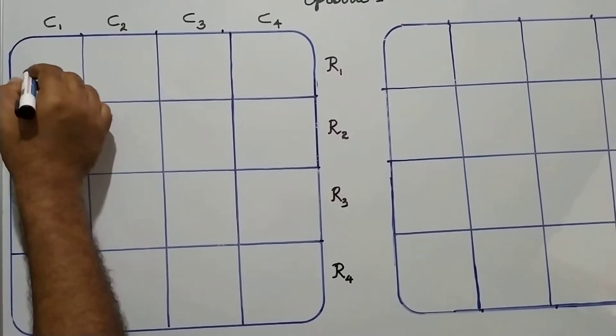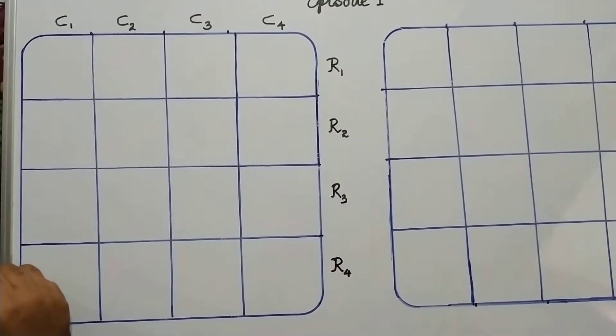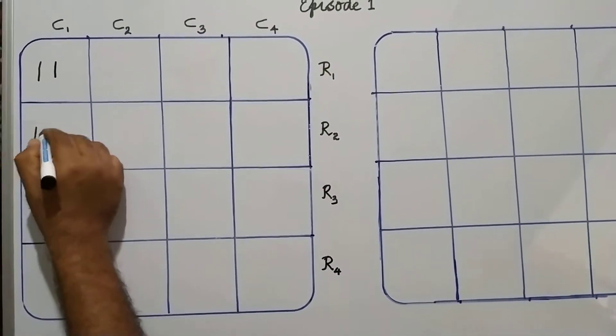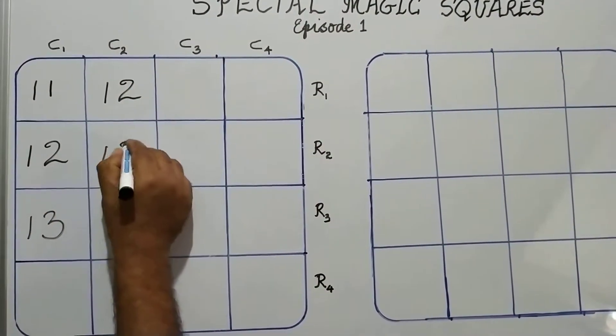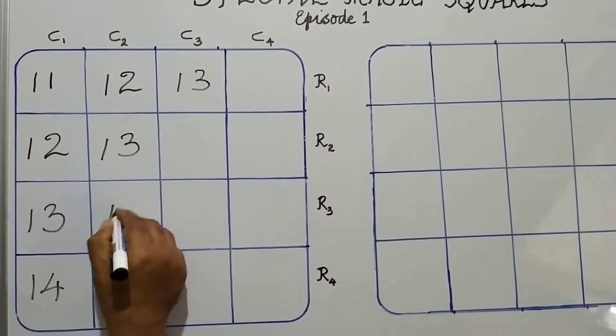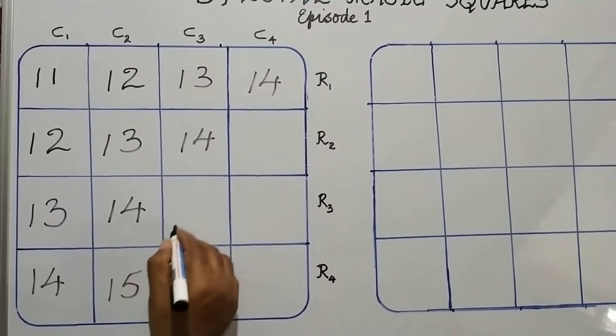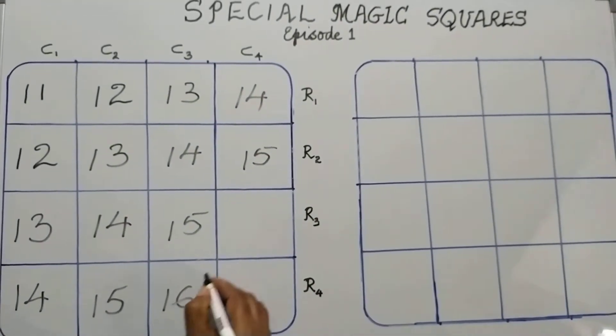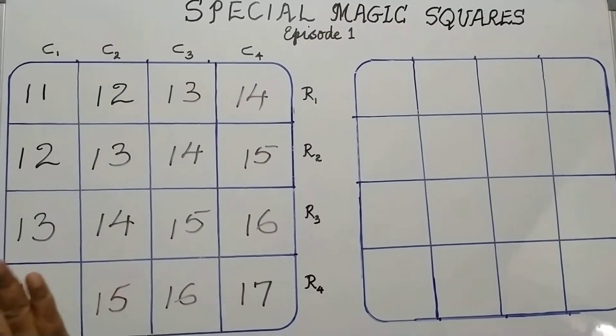The base square is a 4 by 4 square. The numbers that I have chosen are 11, 12, 13, 14, 15, 16, and 17. So, these are the numbers that I have chosen.